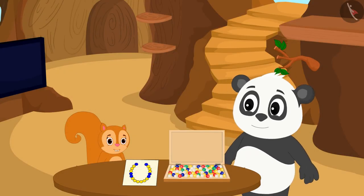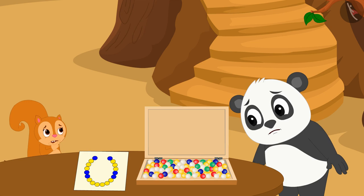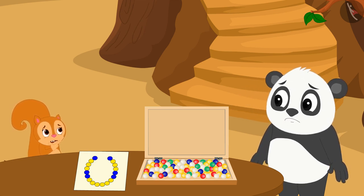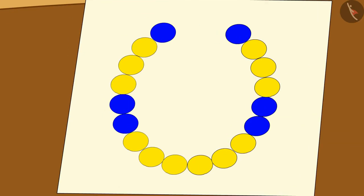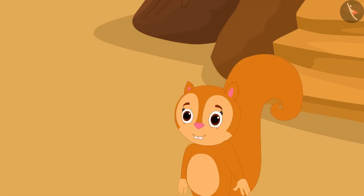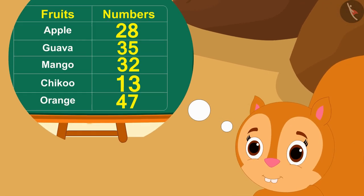But all the beads are scattered. Chanda and Golu are not able to understand whether they have enough blue and yellow beads to make the necklace according to Golu's design or not. Chanda immediately remembered that she could also find a solution to this problem by making a data table.